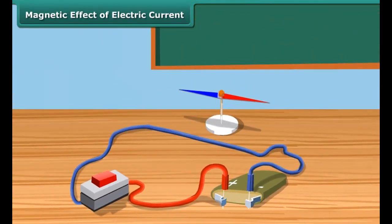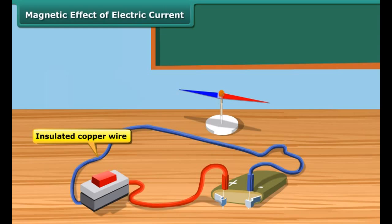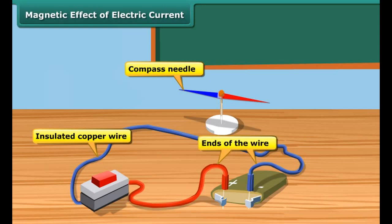When an electric current is passed through a wire, it behaves like a magnet. To understand this, take a thin insulated copper wire and fix it in the north-south direction. Place a compass needle, which is a tiny magnet, under the wire. Connect the two ends of the wire to a battery.